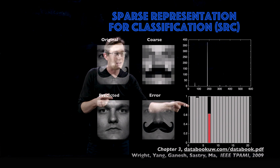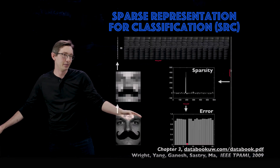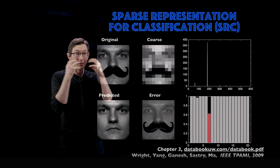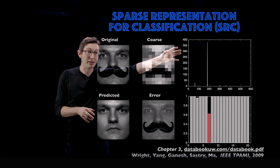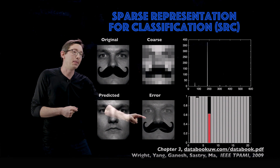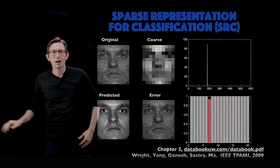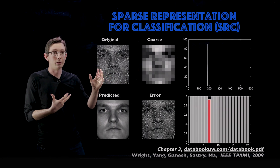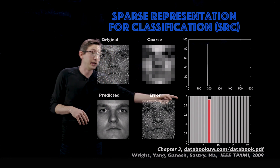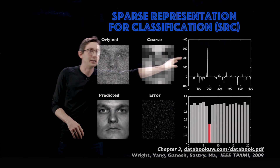Going back to the mustache example — even with a pretty big occlusion — there is still enough information in the eyes, nose, and chin for the algorithm to correctly identify the person. For salt-and-pepper noise, this is actually surprisingly hard for the algorithm and you get relatively large errors. White noise is a little bit easier, giving relatively low reconstruction errors.